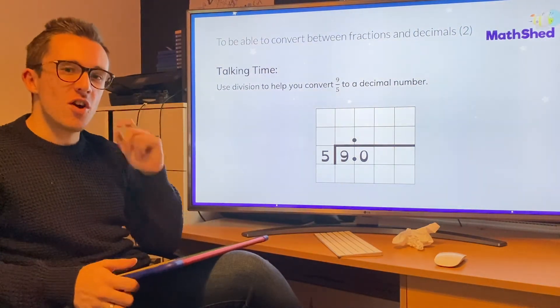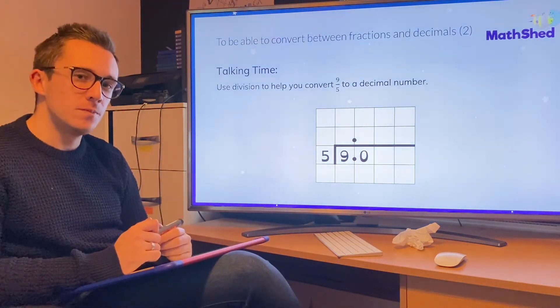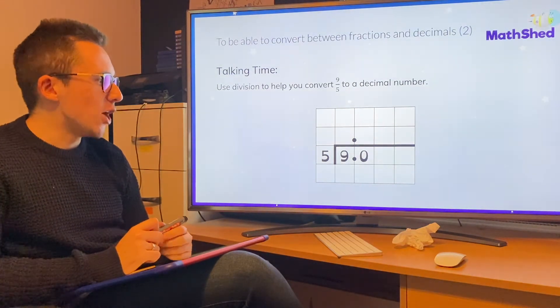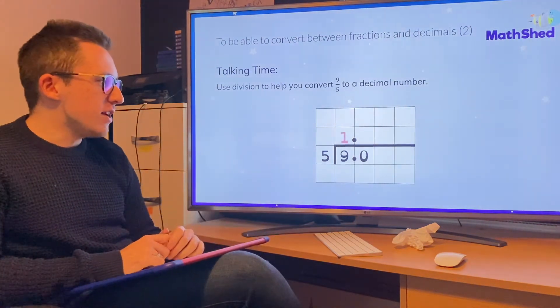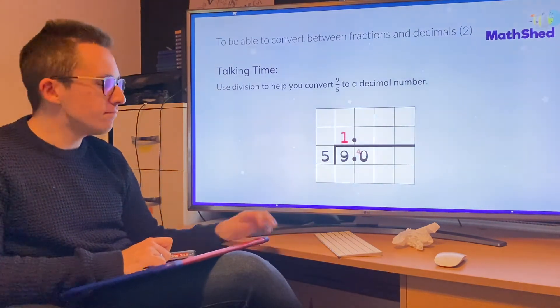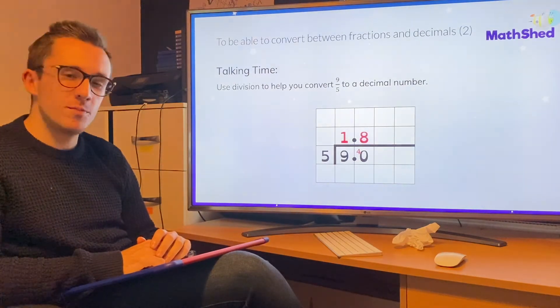Can you have a go at nine fifths, please? Do exactly the same. You're just dividing. Pause the video now. Okay. Five goes into nine once, with four left over. Five goes into forty eight times. Answer: 1.8.